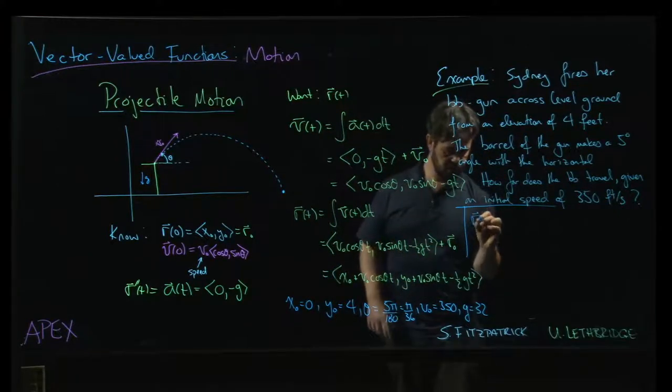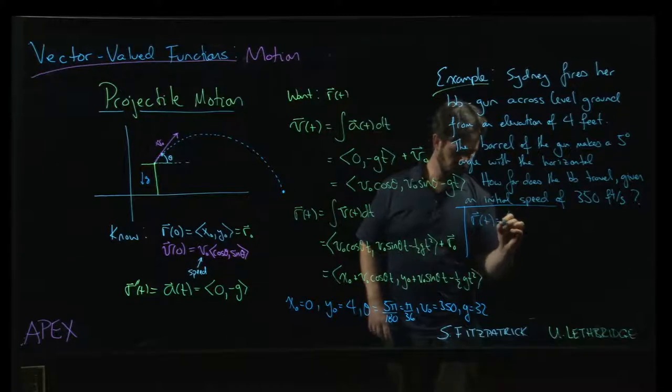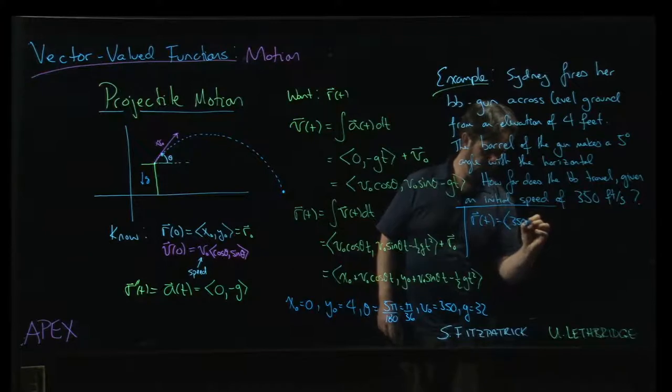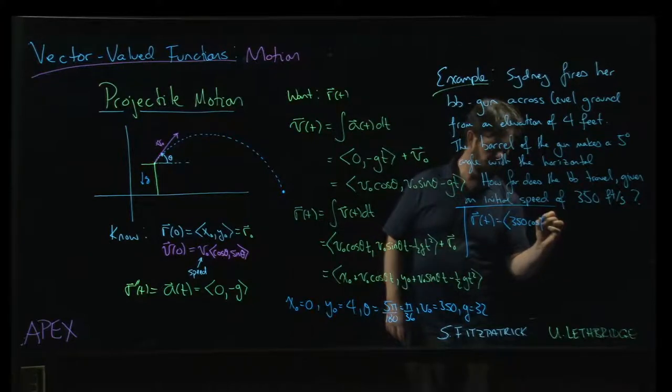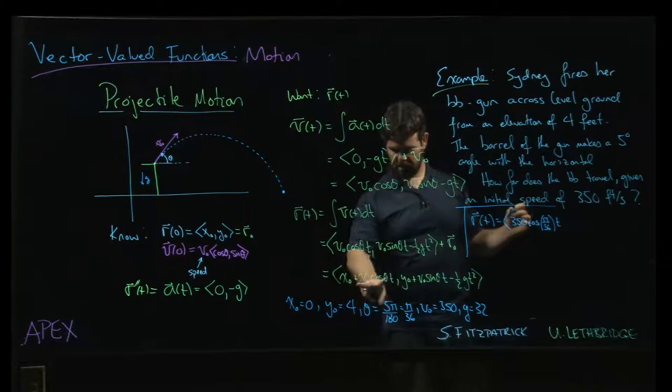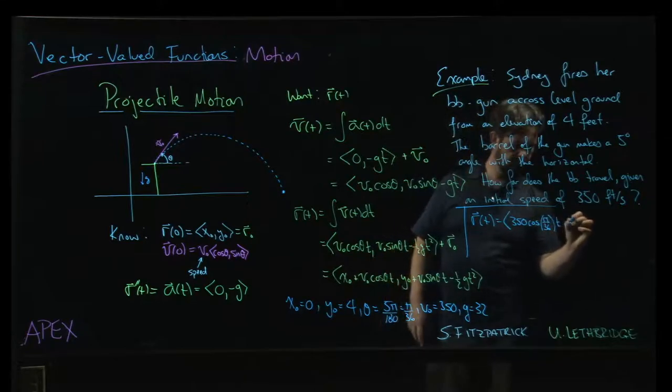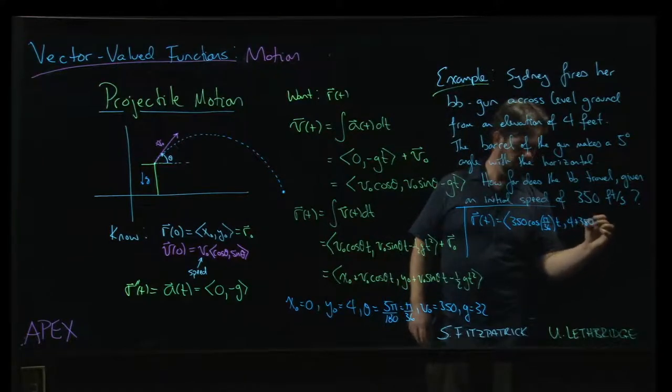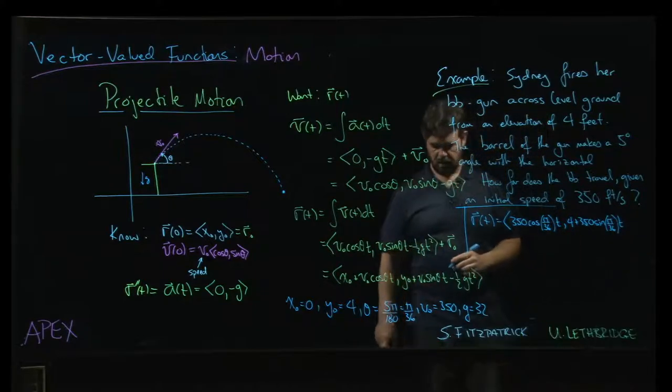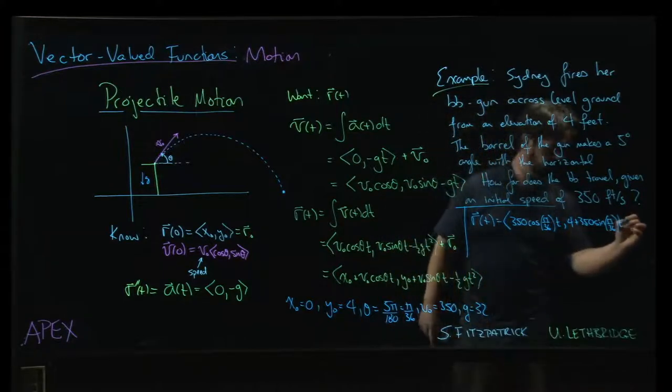So you plug all these details in, and we're going to get 350cos(π/36)t for the x component, and then we're going to get 4 + 350sin(π/36)t